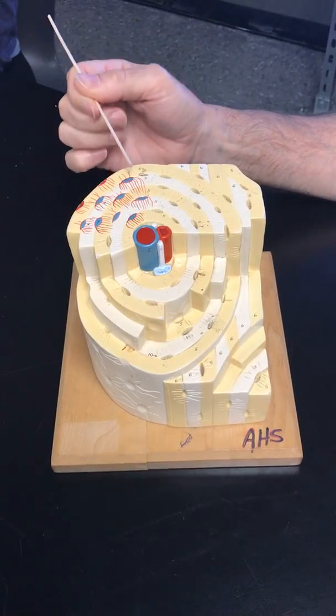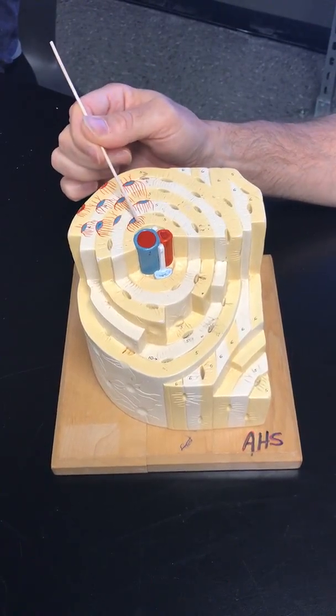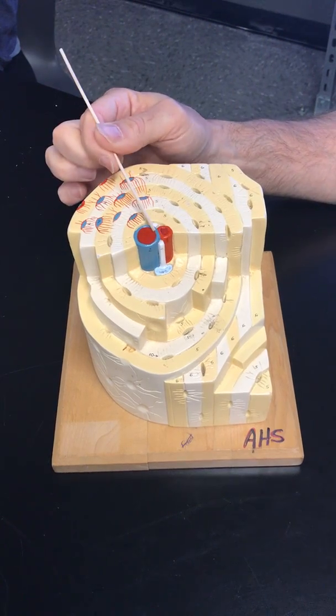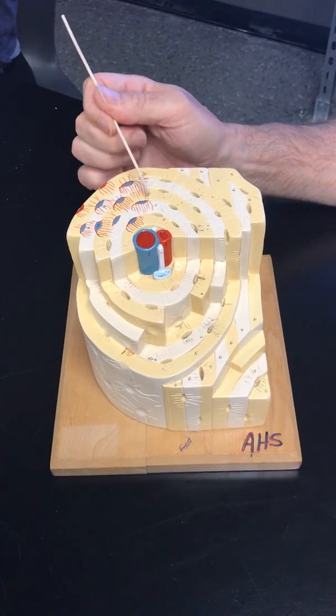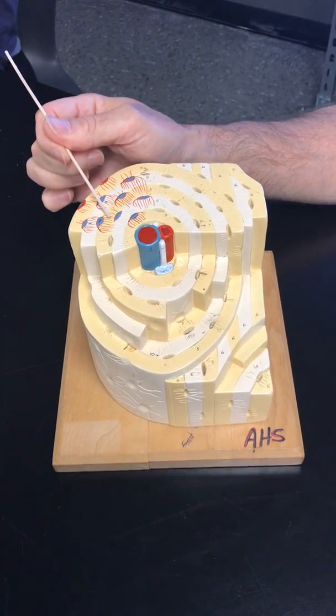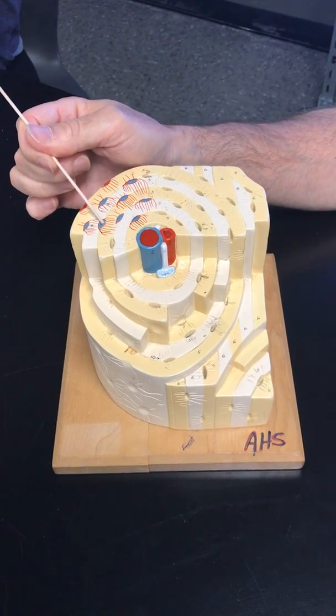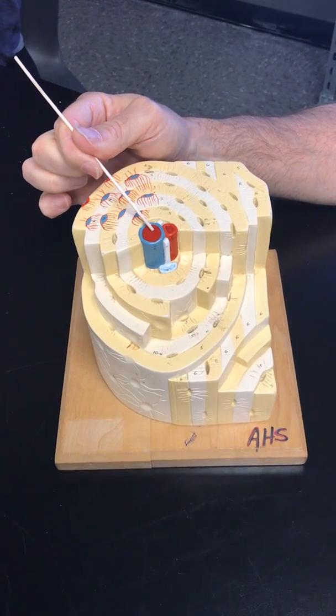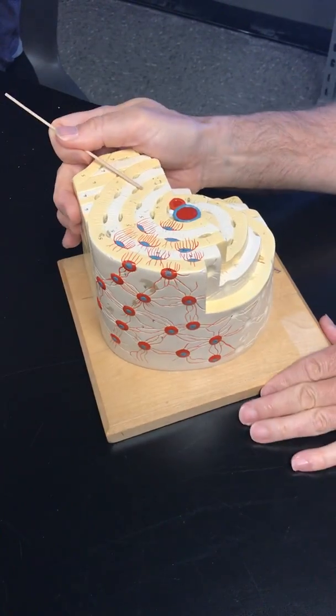All the osteocytes are connected to one another and ultimately connected to the central canal via these little red lines. These are the canaliculi, so they run from cell to cell to cell to cell, the central canal. You see them here on the side too.